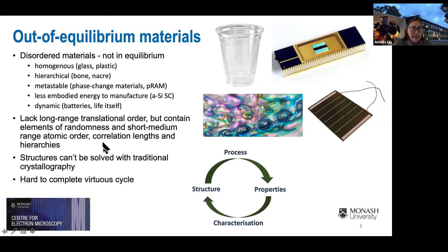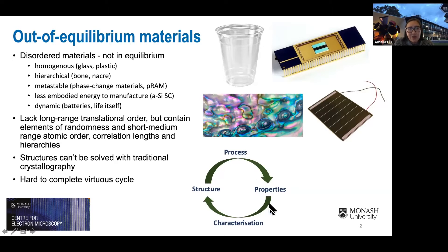These materials lack long-range translational order but they do contain elements of randomness and also elements of short- to medium-range atomic order. They might contain different correlation lengths and hierarchies that reflect the process by which they were created. Unfortunately, these structures cannot be solved with traditional crystallography because traditional crystallography deals with structures that have long-range translational order, making it very hard to strongly connect the structure of the material to their properties.